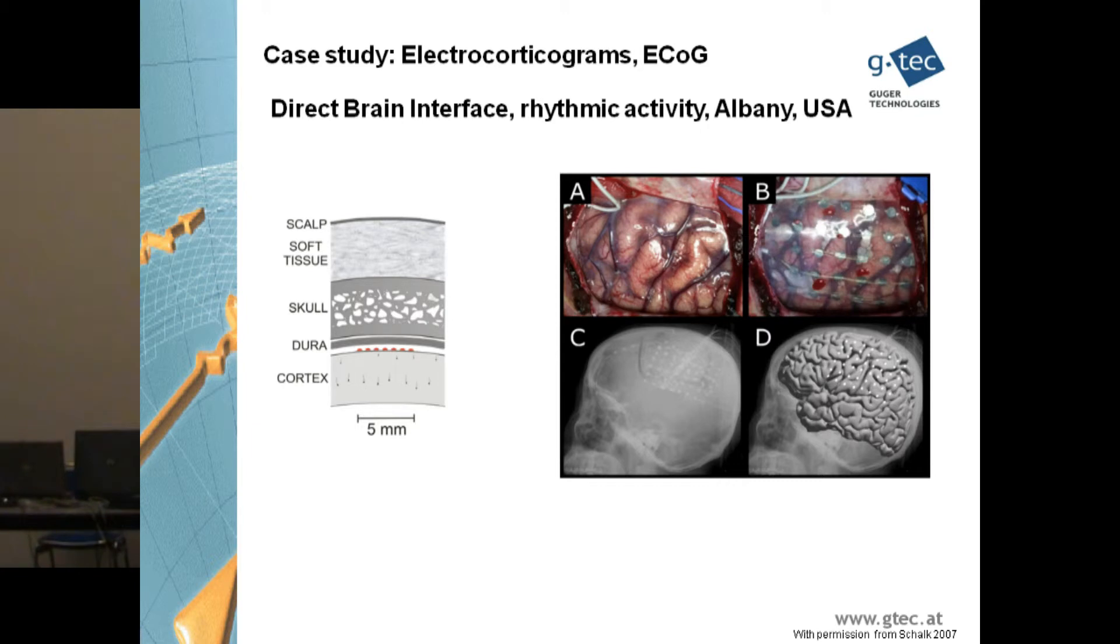So here you see an image of the head. On top is the scalp where you normally place the EEG electrodes. Then you have some soft tissue, the skull. And below you can place the ECoG grid, for example. And the distance from here to the ECoG grid is about 1 inch, which is quite amazing. So if you think about your brain, it is much smaller than you would guess from your head.